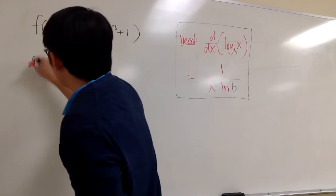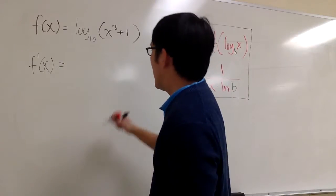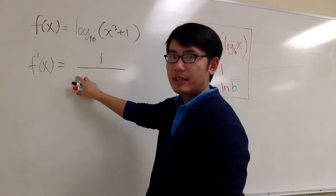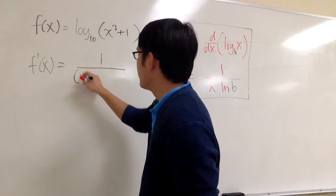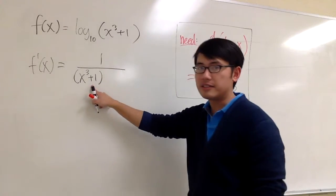So to take the derivative of this, let me write down f prime of x. I will first get 1 over, I will put the inside down here, it stays the same for now. So I have x to the third power plus 1, the inside stays the same.